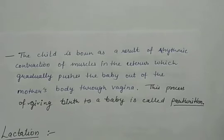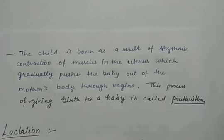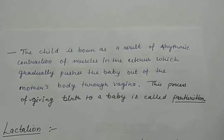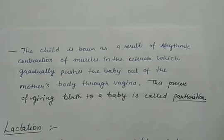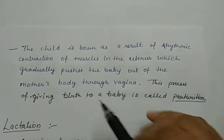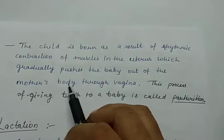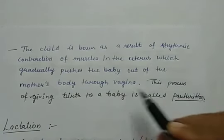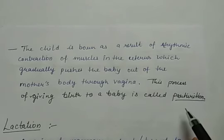The child is born as a result of rhythmic contractions of muscles in the uterus after the gestation period. Because of these contractions there is a lot of pain in the female's reproductive system, called labor pain. Because of labor pain and these muscle contractions, the baby is gradually pushed from inside the body to outside through the vagina. The process of giving birth to a baby is called parturition.